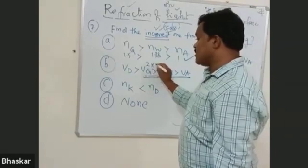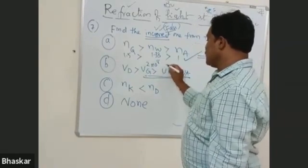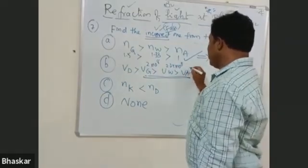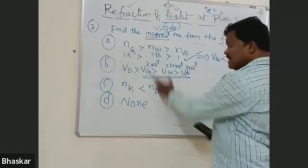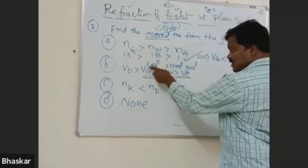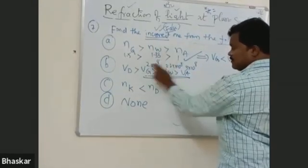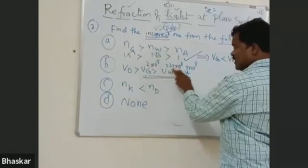2 into 10 power 8 in water. What is the value of VW? 2 into 10 power 8 in water. Then 2.25 x 10 power 8 in water. Then 3 into 10 power 8 in air. I will choose 2 into 10 power 8. These are 2. 2.25 x 3.